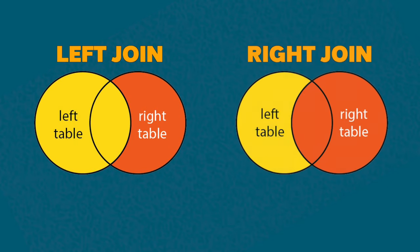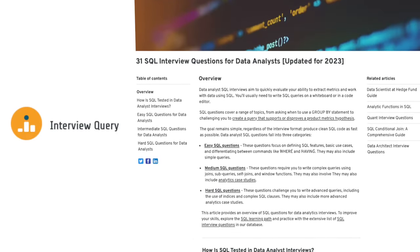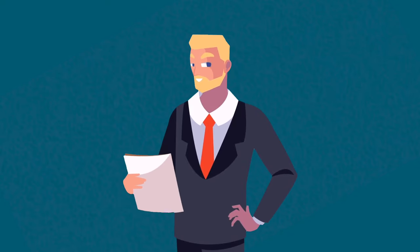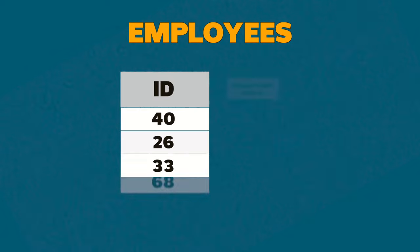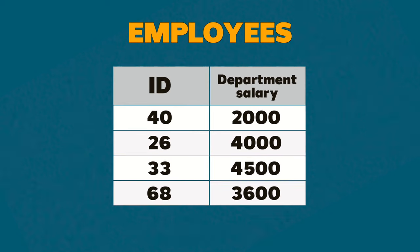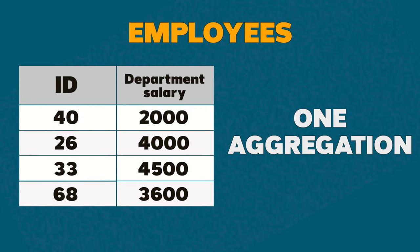The most common easy SQL question I've ever heard is: what is the difference between a left join and a right join? Obviously, we have a blog post below where you can read the answers to all of these. Another classic easy question: given a table called employees, how can we find the largest salary for each department? It has just an employees table with columns ID, department, and salary, and essentially what you need to do is just one aggregation with a GROUP BY. It's a very simple query that really utilizes just one or two concepts.